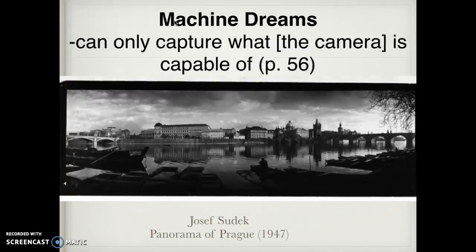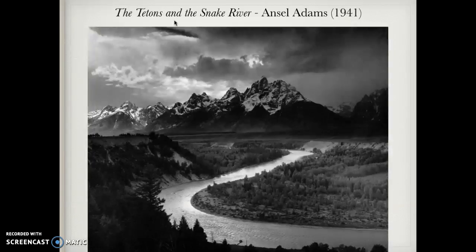There's a quote: 'We can only capture what the camera is capable of.' As history progresses and the camera improves, we see the quality of pictures change, but also the manipulation of pictures has changed. This is a panoramic of Prague by Joseph Sudek, who spent his whole life taking panoramics of his hometown — an amazing feat of pushing the boundary of what the camera is capable of doing.